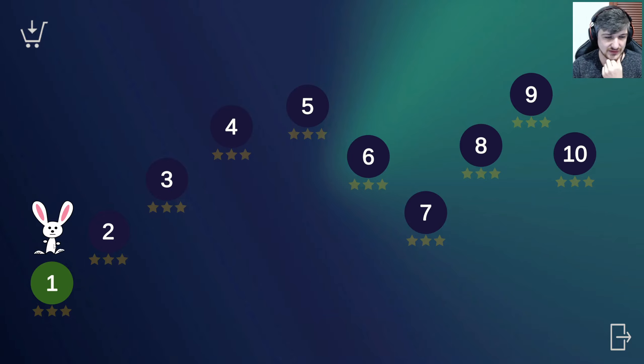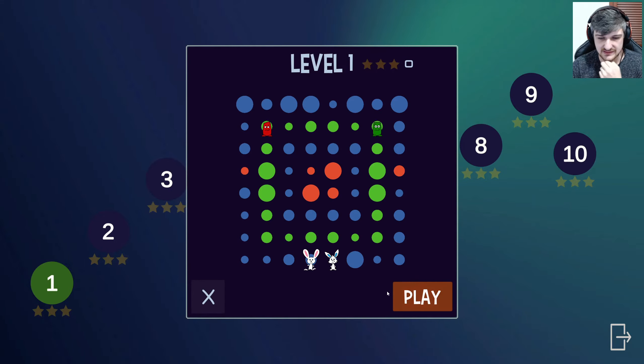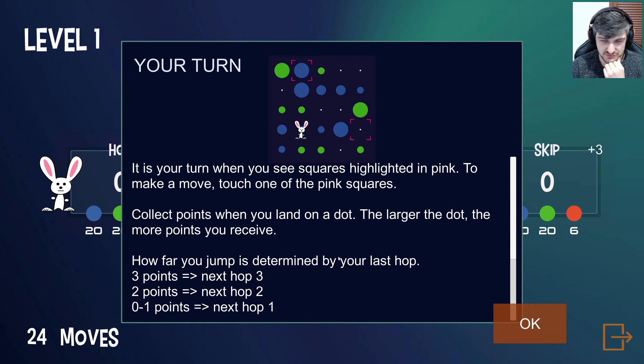I mean, look at this rabbit, it's obviously the best. What is this? Looks like a puzzle game. It is your turn when you see squares highlighted in pink. To make a move, touch one of them. Collect points when you land on a dot - the larger the dot, the more points you receive. How far you jump is determined by your last hop.